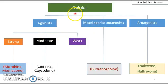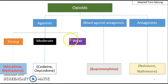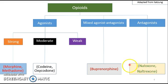We can divide opioids into three main categories: opioid agonists — which include strong agonists such as morphine and methadone, moderate agonists such as codeine and oxycodone, and weak agonists. We also have the mixed agonist-antagonist opioids such as buprenorphine, and then the opioid antagonists such as naloxone and naltrexone — two very important life-saving drugs that can reverse the effects of the agonists.